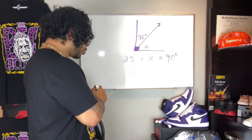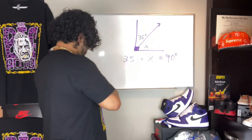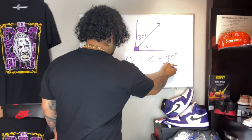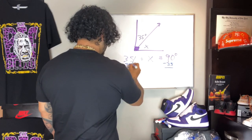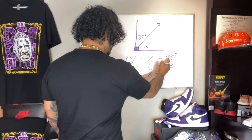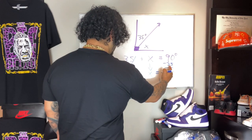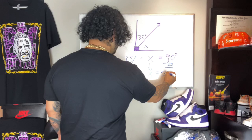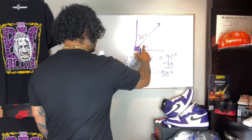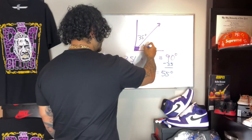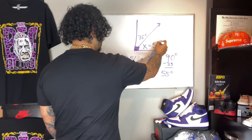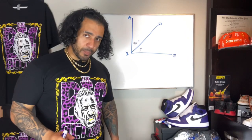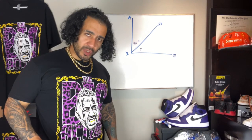What that says is: 35 plus a number we don't know yet, when added together, gives you 90 degrees. So what I do is subtract 35 degrees from both sides to make a balance, cancel it out, bring down the X, and 90 take away 35 is 55 degrees. So the missing angle X is 55 degrees — that's the complement!